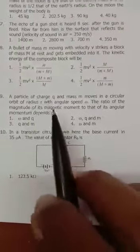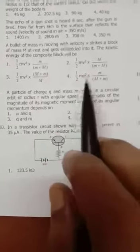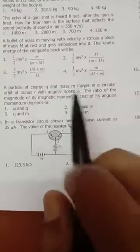Question number 9. One charge q and mass m at radius r, angular speed omega.